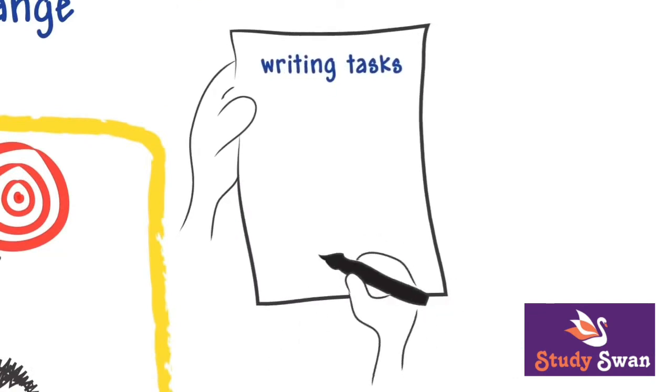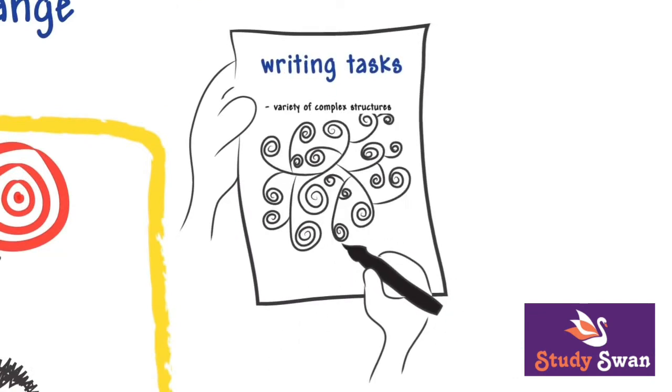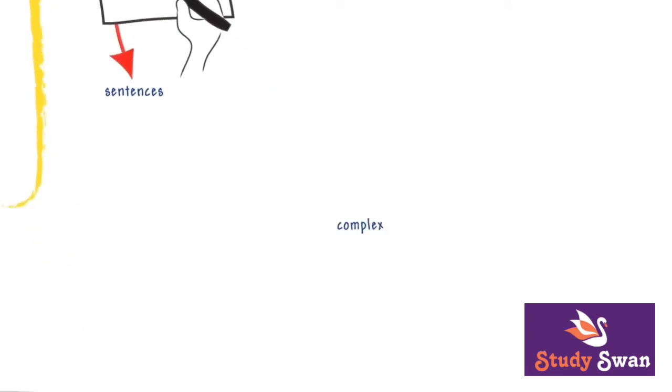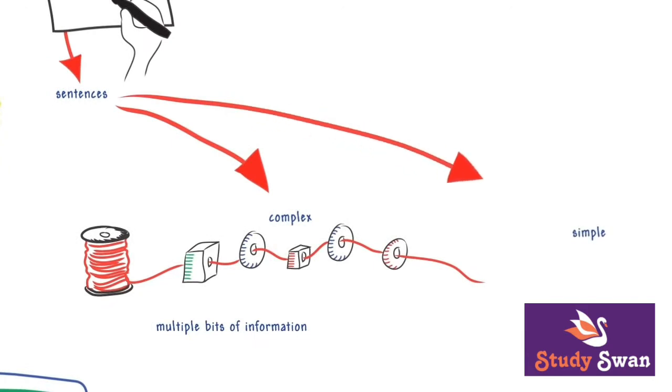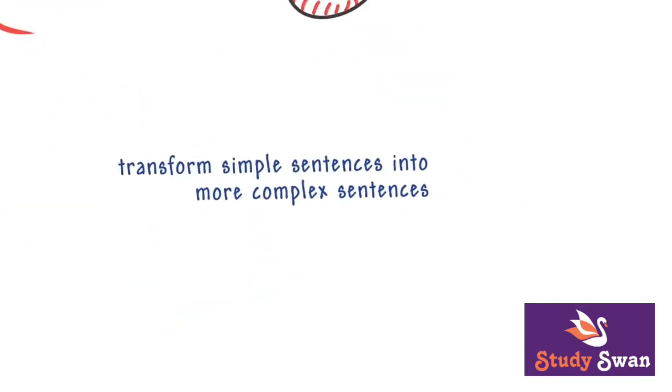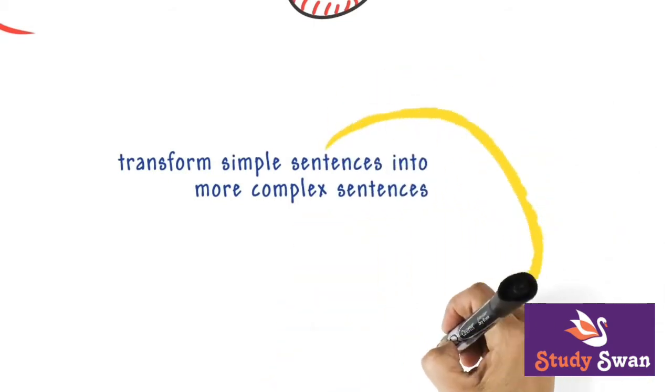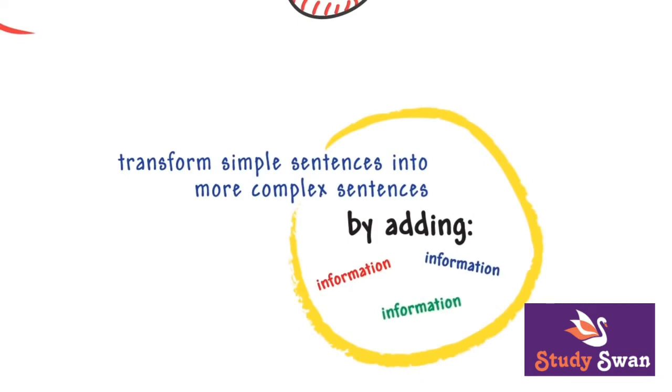In all writing tasks, also use a variety of complex structures. Complex structures are sentences with multiple bits of information. A simple sentence usually has a single piece of information. When you practice writing, transform simple sentences into more complex sentences by adding more information to the sentence.